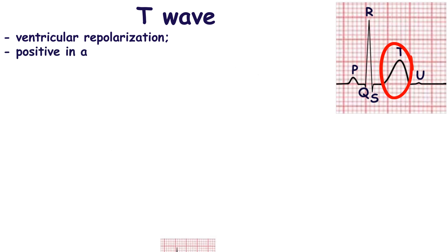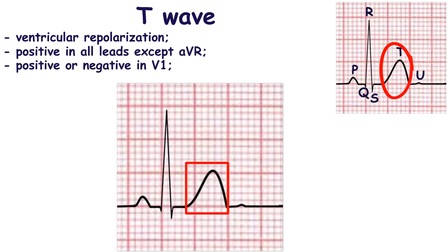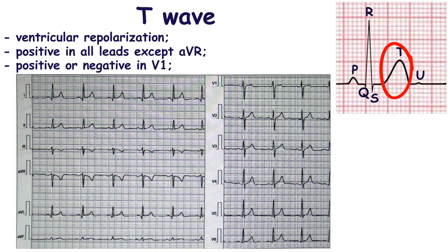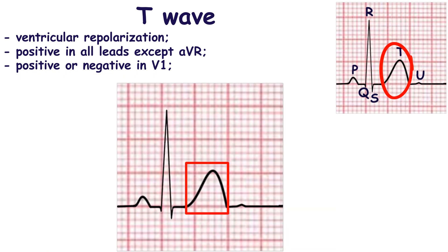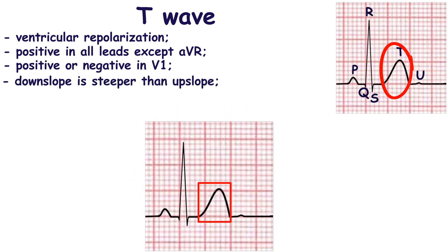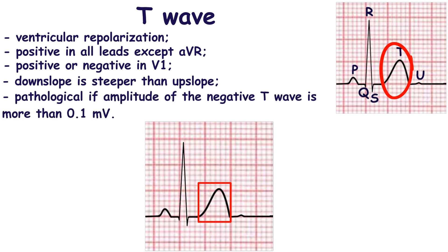The T wave reflects ventricular repolarization. It should be positive in all leads except AVR, and may be positive or negative in V1. Usually the highest amplitude of the T wave is present in leads V2 to V3. Normally the T wave is asymmetric — the downslope is steeper than the upslope. The T wave is concordant to the QRS complex, meaning a positive T wave follows a positive QRS complex and vice versa. Normal T wave amplitude ranges from 0.1 to 0.5 mV in limb leads and 0.1 to 1 mV in precordial leads. T wave inversion is considered pathological if the amplitude of the negative T wave is more than 0.1 mV.